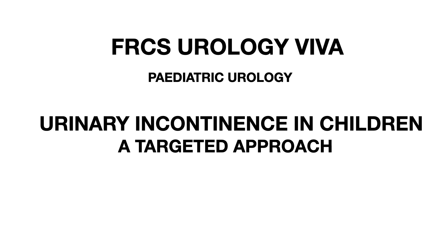'Tell me the functional causes of urinary incontinence in children.' These include overactive bladder, giggle incontinence, deferred voiding, dysfunctional voiding, or lazy bladder. 'What is overactive bladder?' It is urinary frequency and urgency with or without urge incontinence and nocturia.